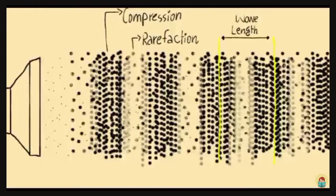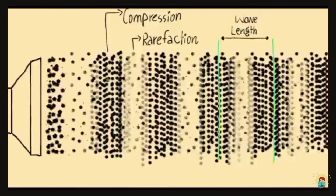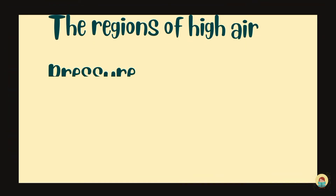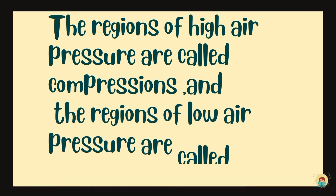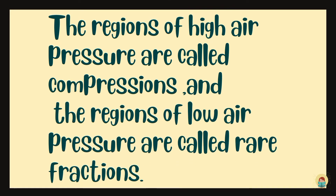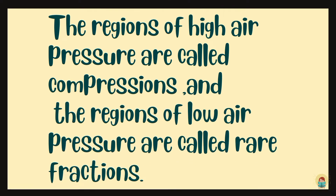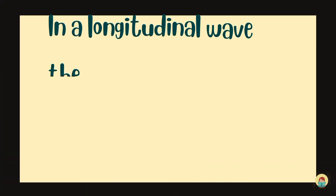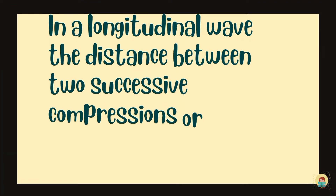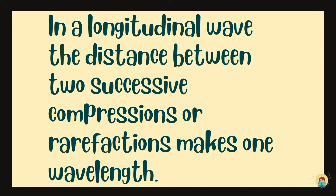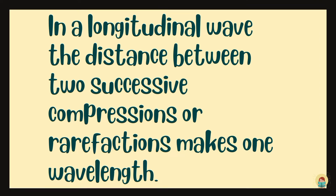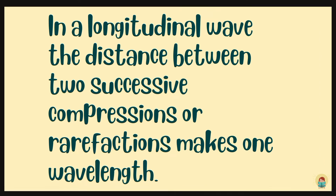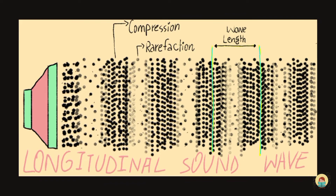In a longitudinal wave, there are mainly two noticeable topics: compressions and rarefactions. The regions of high air pressure are called compressions and the regions of low air pressure are called rarefactions. Also, in a longitudinal wave, the distance between two successive compressions or rarefactions makes one wavelength.